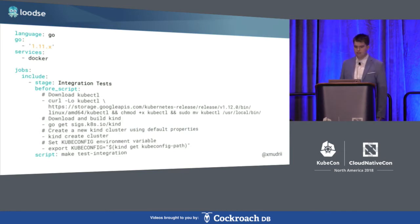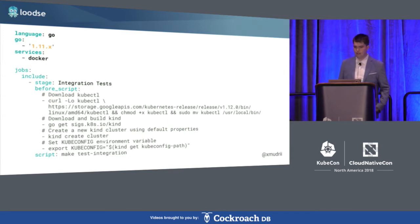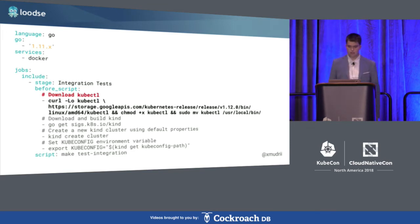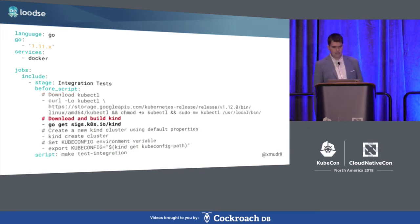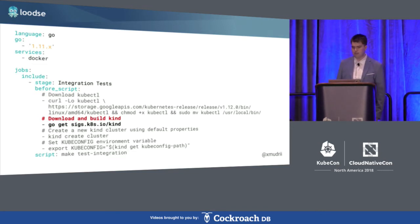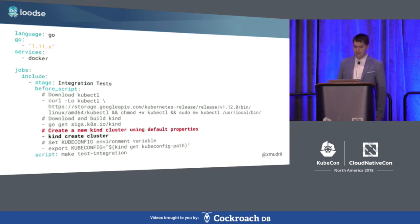This is one manifest where, at the top, we define what environment we use — Go and Docker. Then we define a job which first downloads kubectl. The easiest way to do that is to grab it from the kubectl bucket and move it to our PATH. Then we download KIND with a go get command. KIND also has binaries on GitHub releases, so you can use a similar step as for kubectl if you prefer running the latest stable versions.